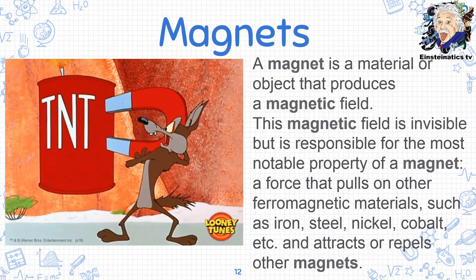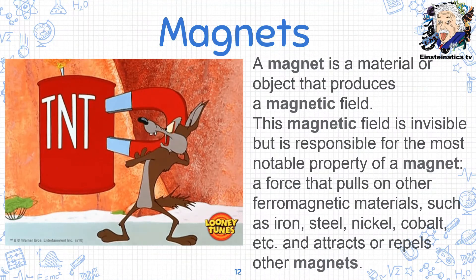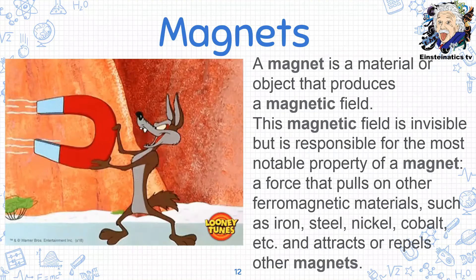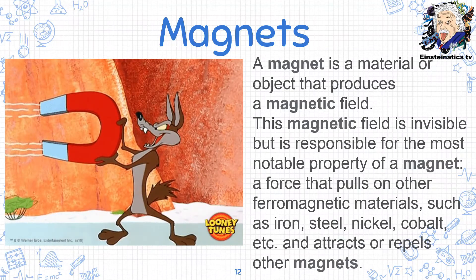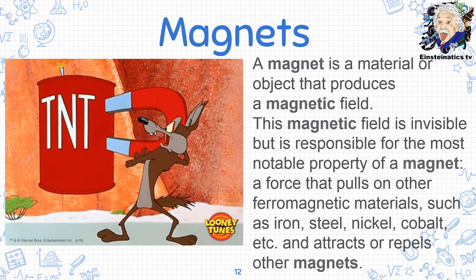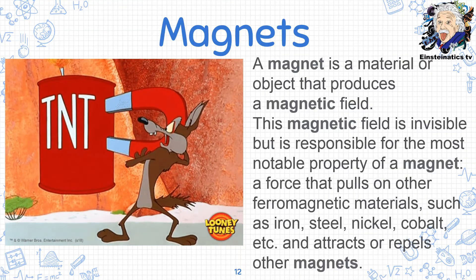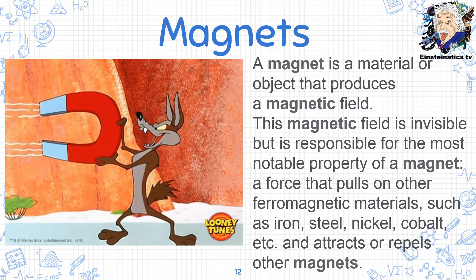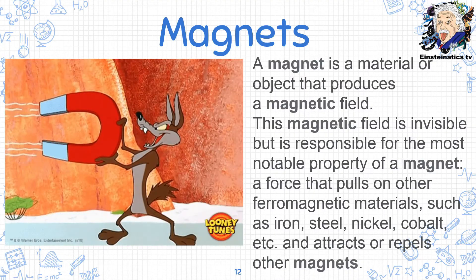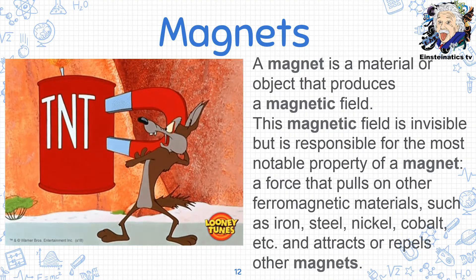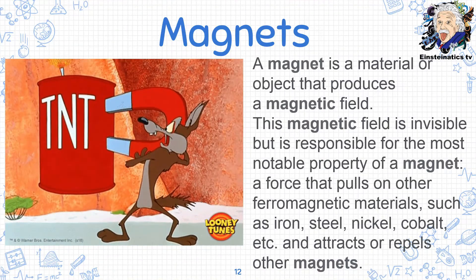You might be wondering: what is a magnet? When you talk about magnets, this refers to materials or objects that produce a magnetic field. A magnetic field is invisible, but it is responsible for the most notable property of a magnet — a force that pulls on ferromagnetic materials such as iron, steel, nickel, and cobalt, and that attracts or repels other magnets.